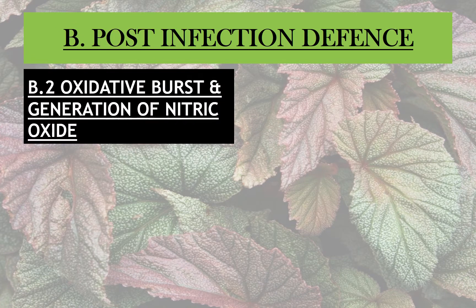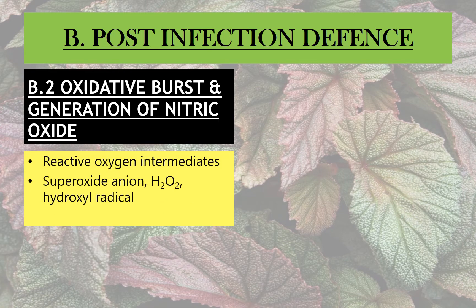The second post-infection biochemical defense is oxidative burst and generation of nitric oxide. Oxidative burst means the generation of reactive oxygen species or reactive oxygen intermediates. These include the superoxide anion, hydrogen peroxide, and the hydroxyl radical. These are chemical entities that are pathogenic not only to the microorganism but also to the host plant. When there is a combination of these reactive oxygen species along with nitric oxide — that is NO — it causes hypersensitive death of the host cells.